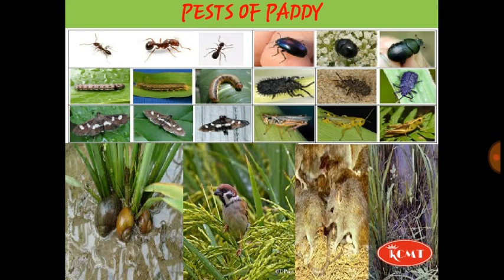Firstly, we will discuss about paddy pests — that means Rice की crop को हानी पहुचाने वाले pests, जिसमें 65% insects होते हैं, कुछ birds होते हैं, चूहों द्वारा, और कुछ molluscan जिसमें Pila आदि आते हैं।